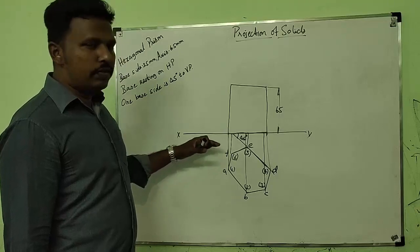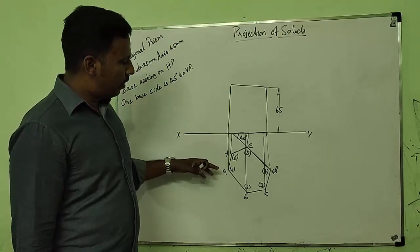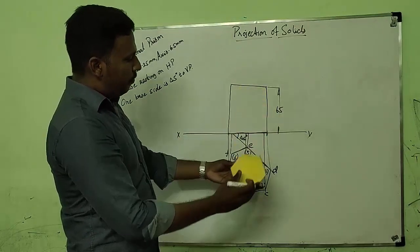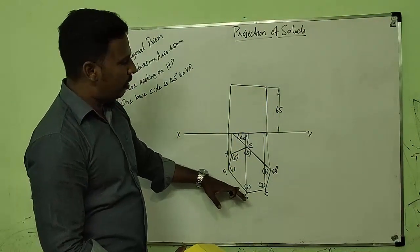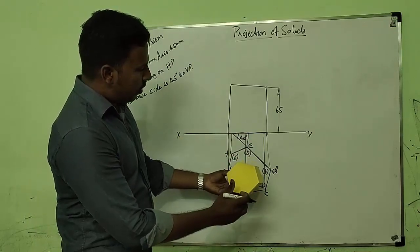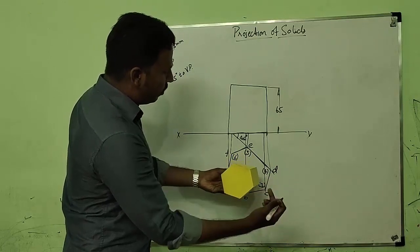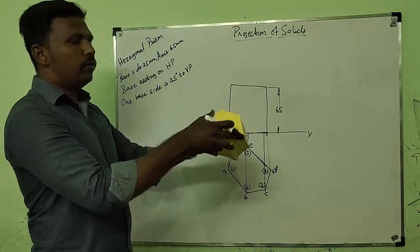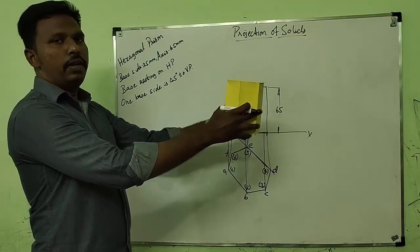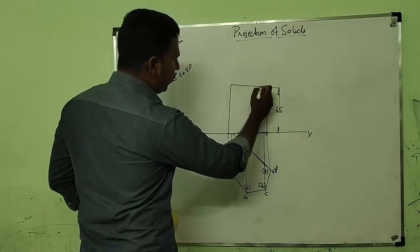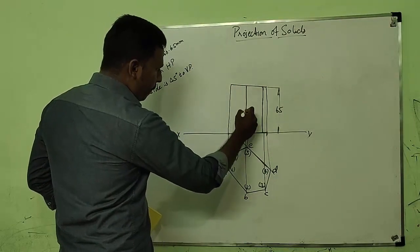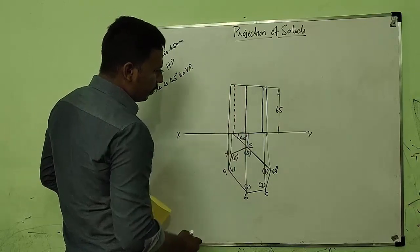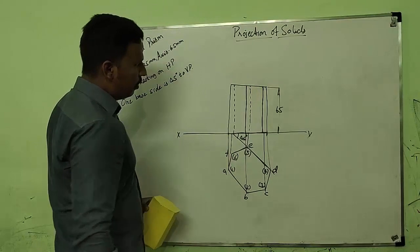Now we have to decide which edges are visible and which are invisible. As we are viewing from the front, the bottom-most edges will be visible and the top-most edges will not be visible. So D4, C3, 2B, and 1A will be visible, while F6 and E5 will not be visible because they are on the rear side.